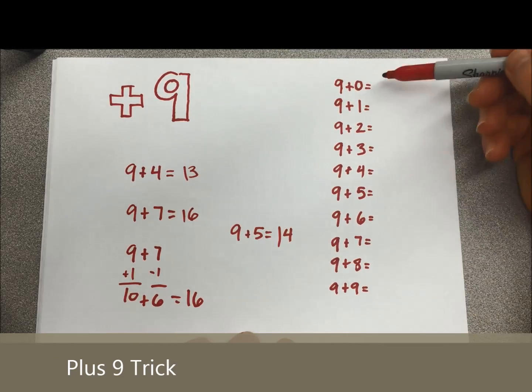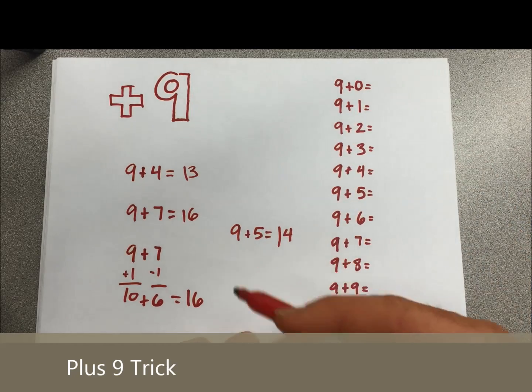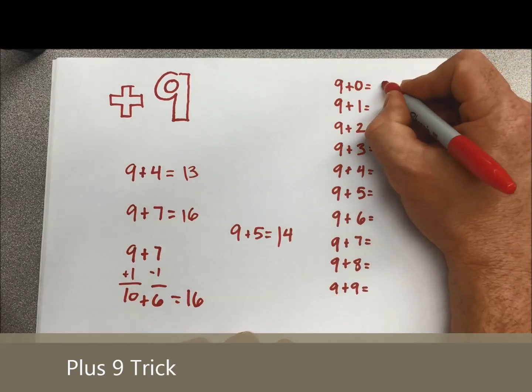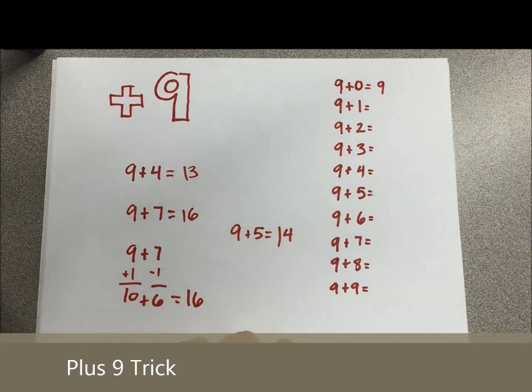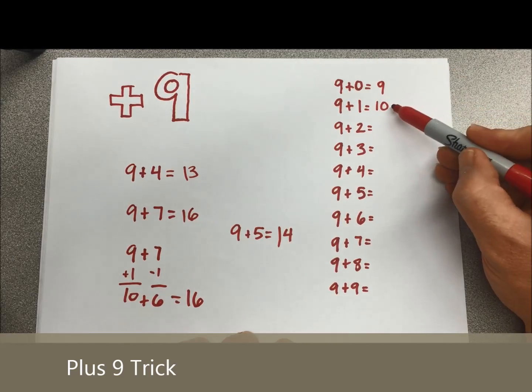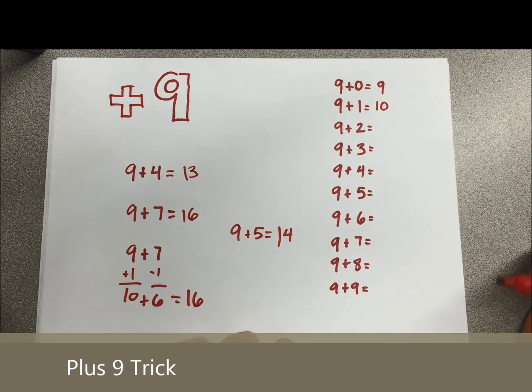Let's run through all of these just for practice. Starting with 9 plus 0, 9 plus 0 would actually be way easier to use the plus 0 trick. 9 plus 0 remains 9. 9 plus 1, let's just bump up 1. We have two easy tricks there, plus 0 and plus 1. We don't need to use the plus 9 trick on those.